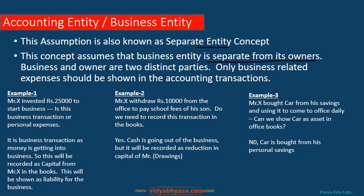Once an owner invests money into a business, that amount is called capital. Any personal expenses should be kept away from the business — the owner should not use business funds for personal expenses. Business is a separate entity and the owner is a separate entity. Only business-related expenses should be shown in the books of account. If anything is withdrawn for personal use, that will be considered as drawings. If any owner withdraws money from the business for personal use, it is called drawings.